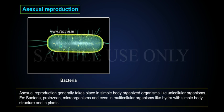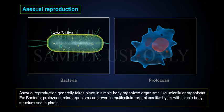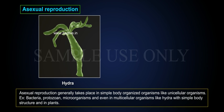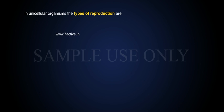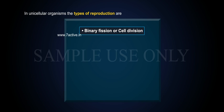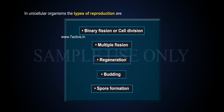Examples of unicellular organisms include bacteria, protozoa, and microorganisms, and even in multicellular organisms like hydra with simple body structure, and in plants. In unicellular organisms, the types of asexual reproduction are: binary fission or cell division, multiple fission, regeneration, budding, and spore formation.